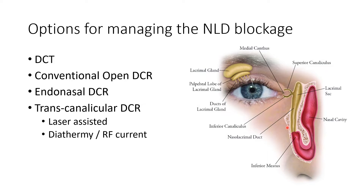We have the conventional open DCR, where an incision is placed over the area of the sac. The sac is opened and a communication is made between the nasolacrimal sac and the middle meatus in the nasal cavity. Then we have endonasal DCR, where the same opening between the nasolacrimal sac and nasal cavity is formed via a route through the nose, with the opening made from inside the nose.